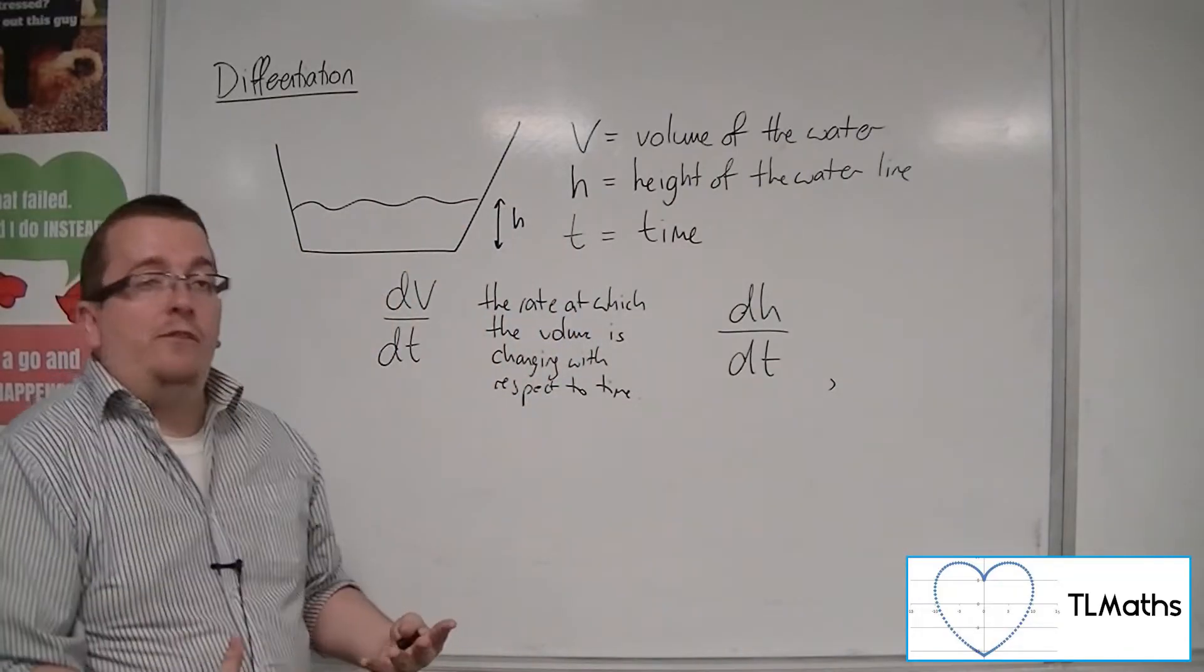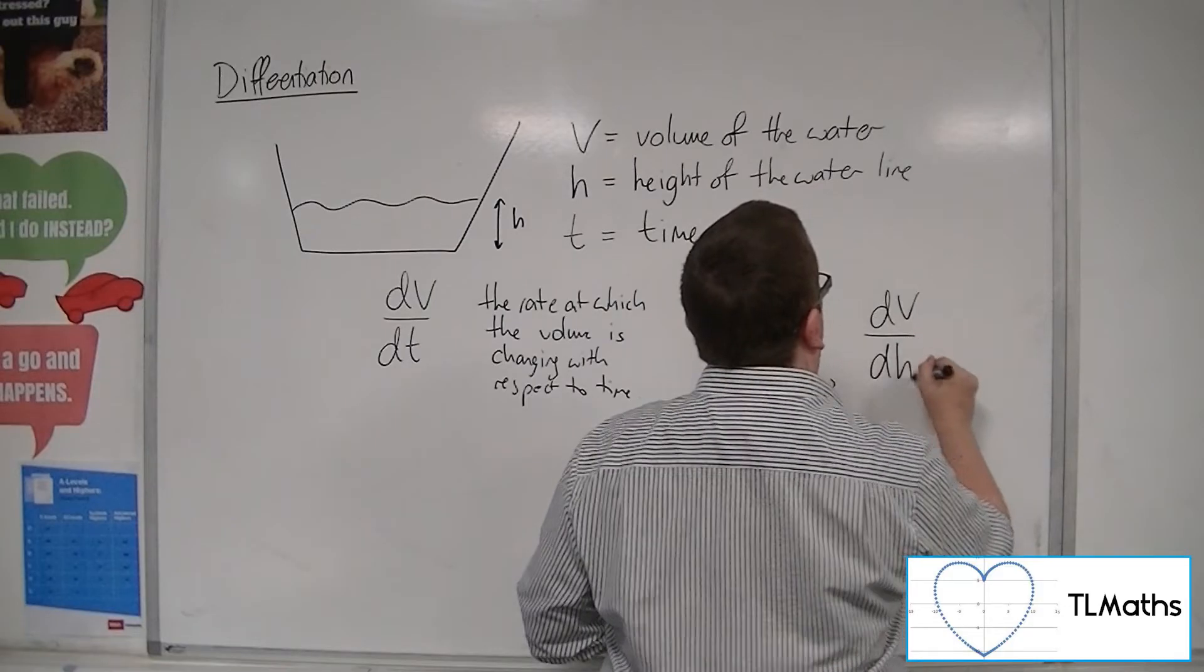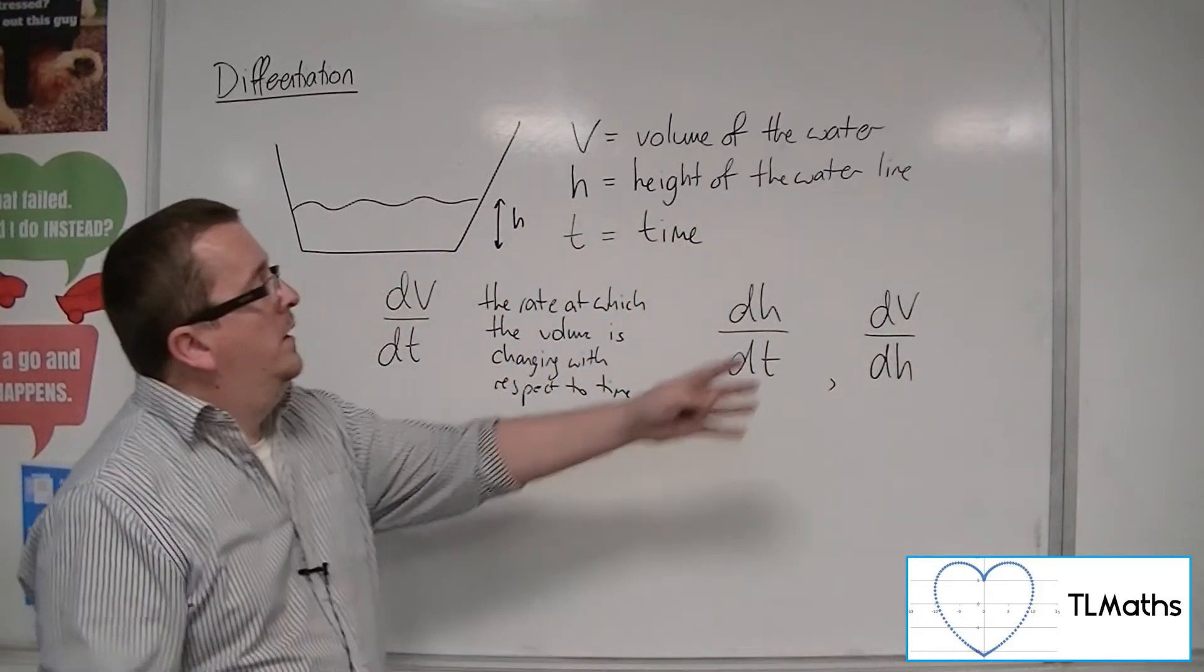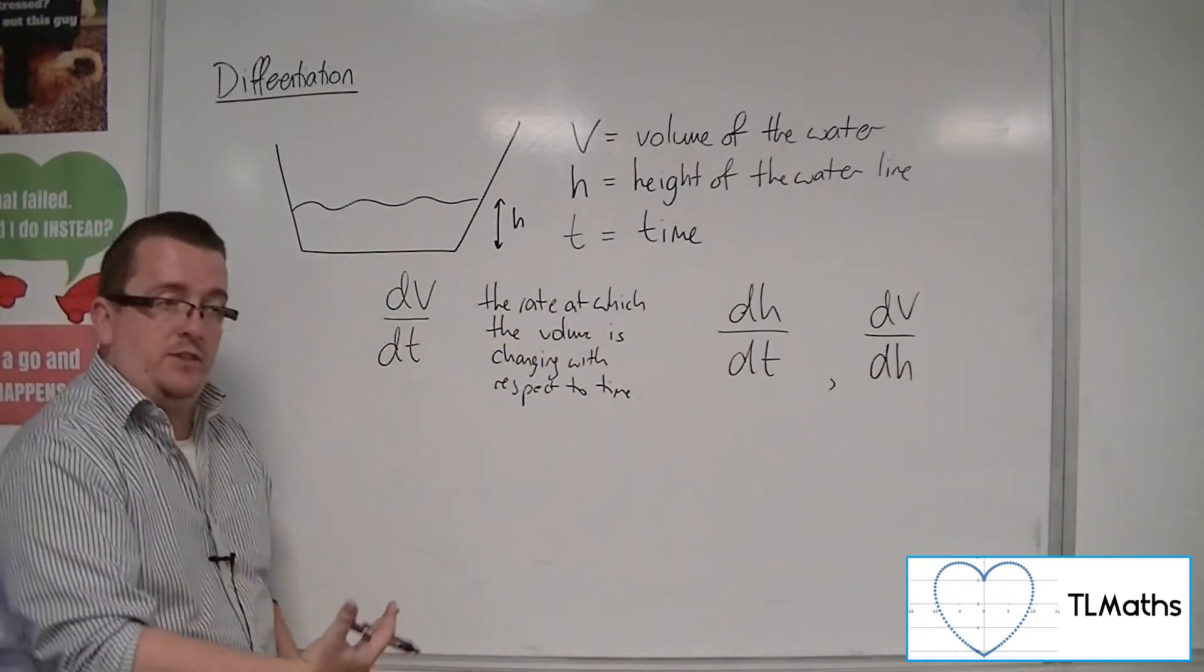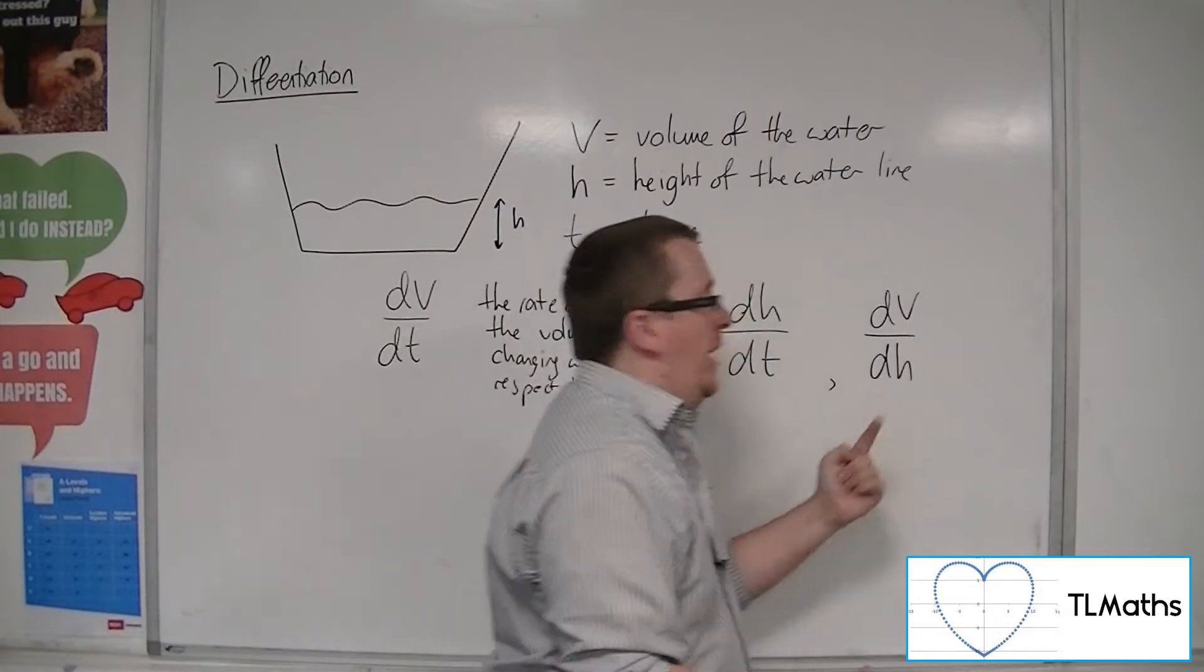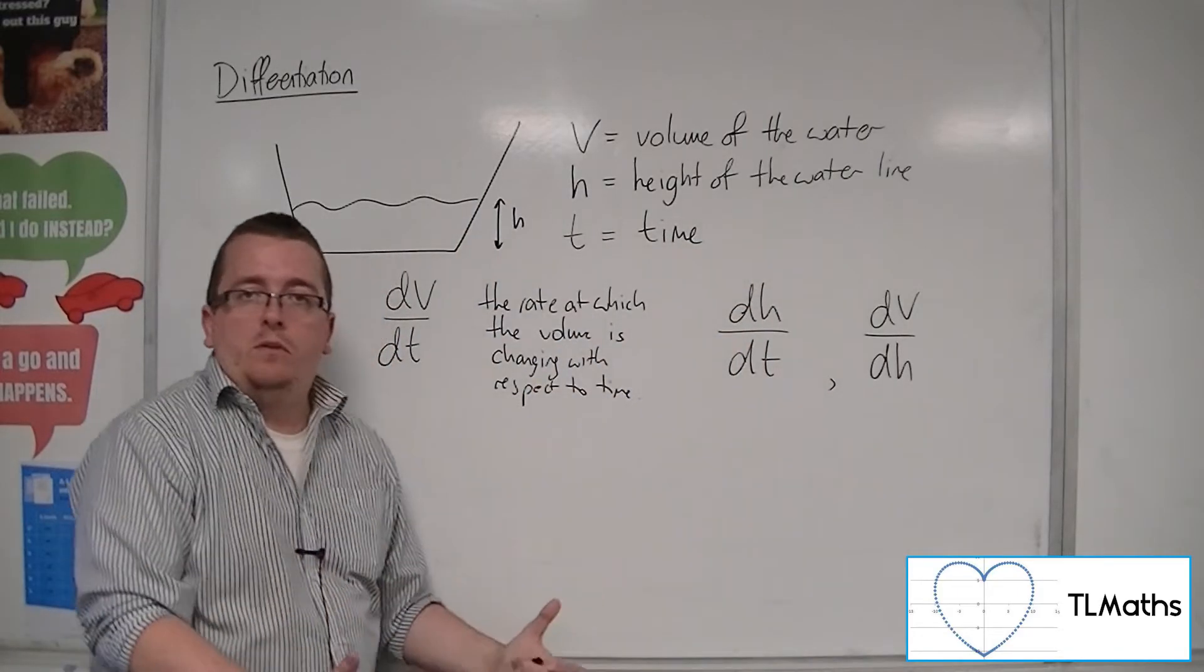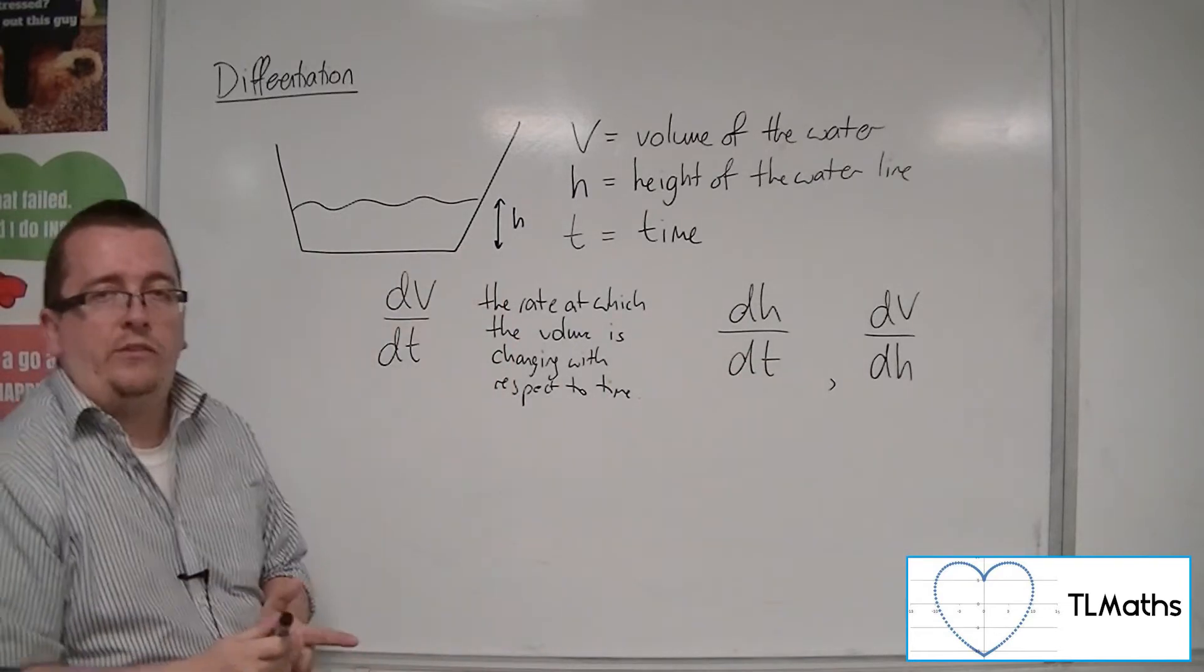And we might have dV/dH. That would represent the rate at which the volume is changing with respect to the height of the water. As the height of the water changes, what is happening to the volume? These seem like three reasonable rates of change to consider.